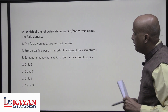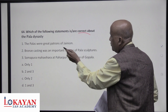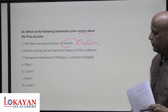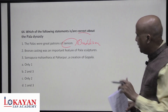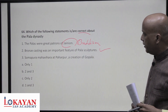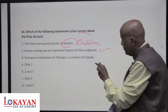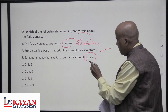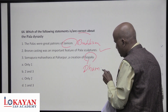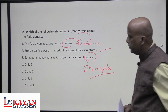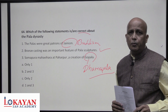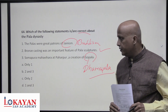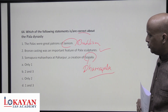Which statements are correct about the Pala dynasty? They were great patrons of Buddhism — not Jainism — and were the last patrons of Buddhism in India. Bronze casting was an important feature of Pala sculpture — correct. Sompura Mahavihara (Paharpur) was created by Dharmapala (not Gopala, who was the founder). Dharmapala built this massive mahavihara, which influenced construction in Myanmar and Indonesia. Only statement two is correct — answer is C.